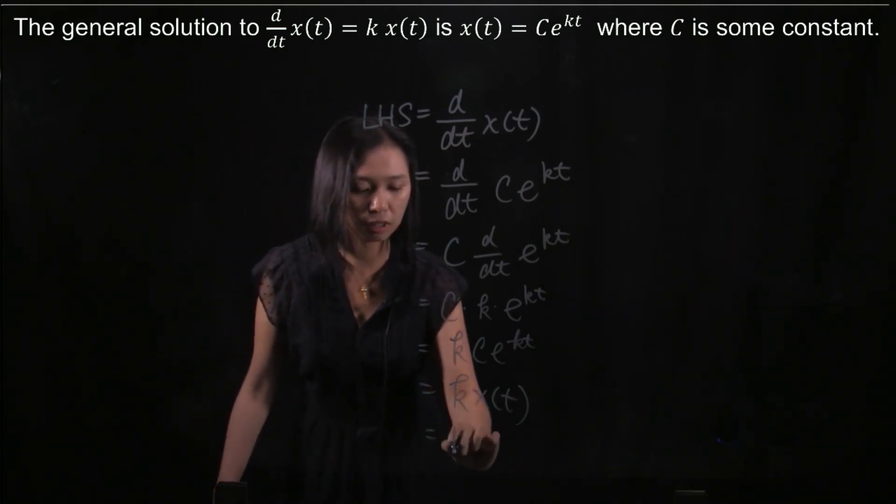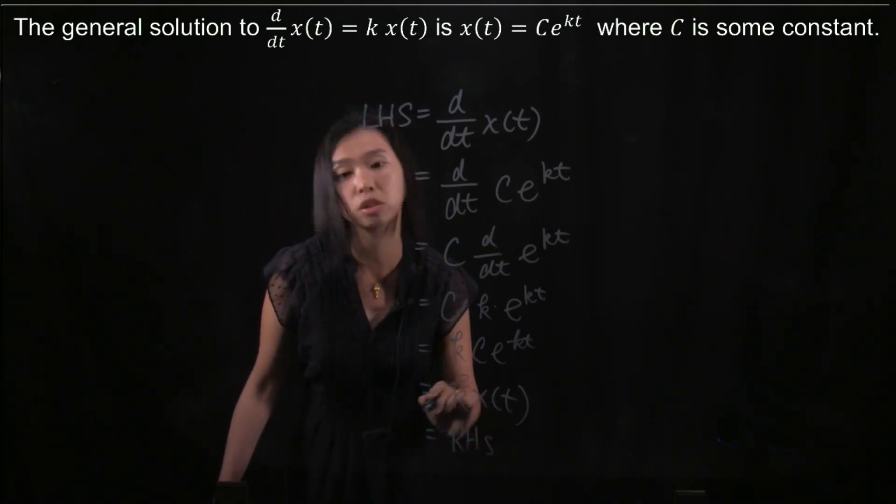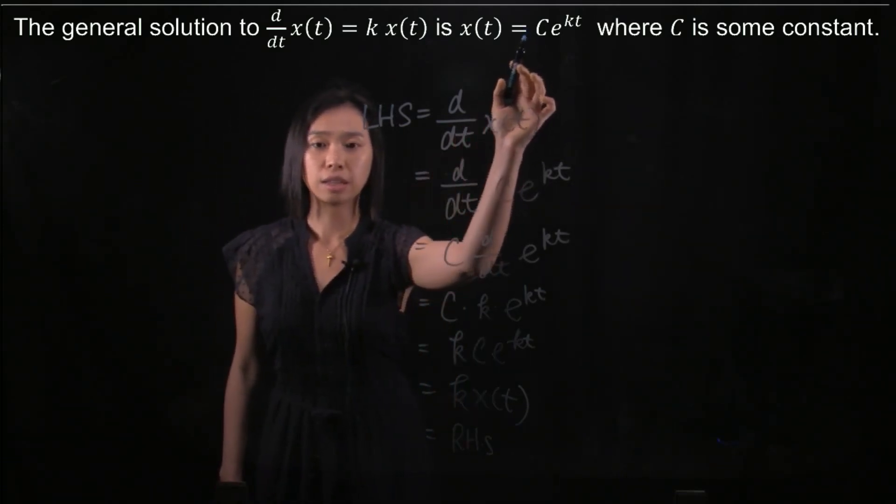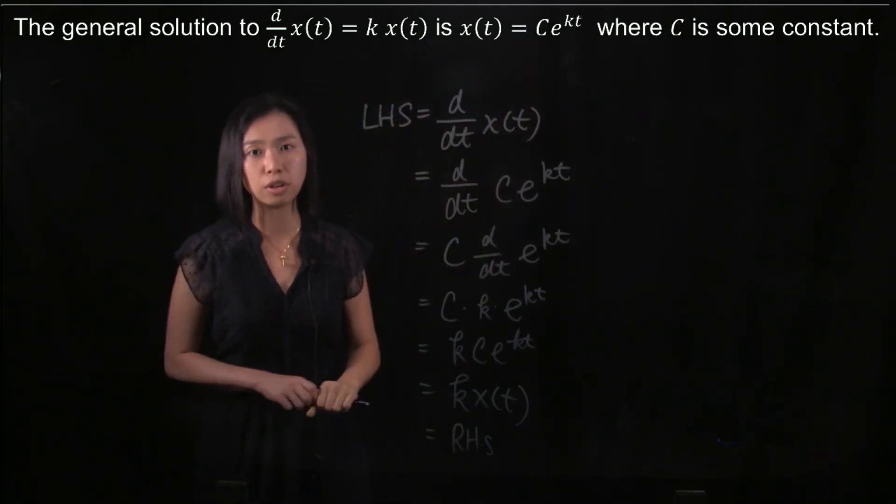And kx(t) is actually the right-hand side of the differential equation. This proves that x(t) = Ce^(kt) is the solution to this differential equation.